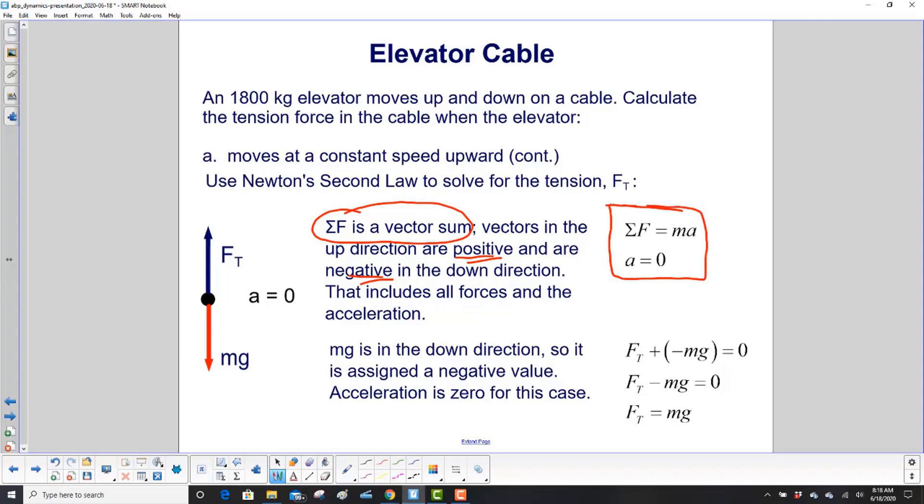Here's Newton's second law: the sum of the forces is ma. What are our forces? We have tension in the up direction, so that's positive, then we have mg in the down direction, so we're adding a negative number. Our acceleration is zero, so m times zero is zero. We have F_T minus mg equals zero. Then we add mg to both sides, and we're left with the tension force equal to mg.